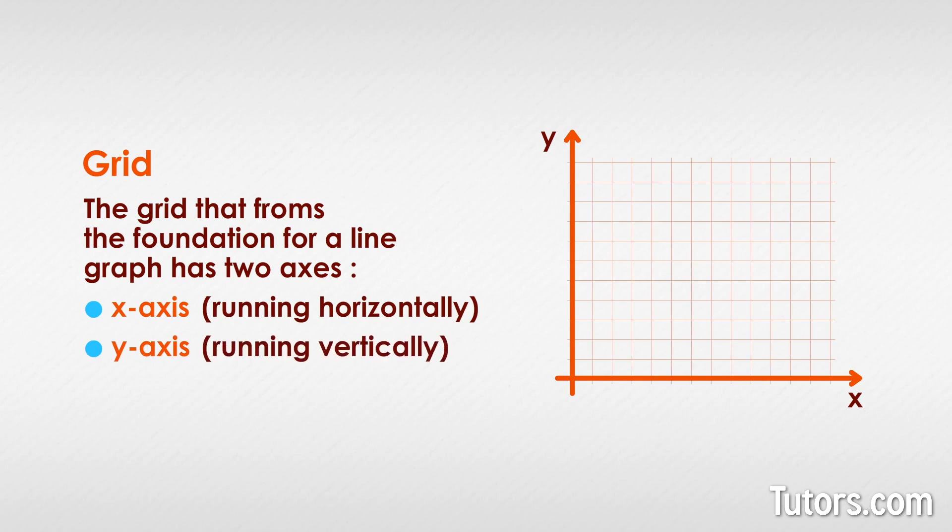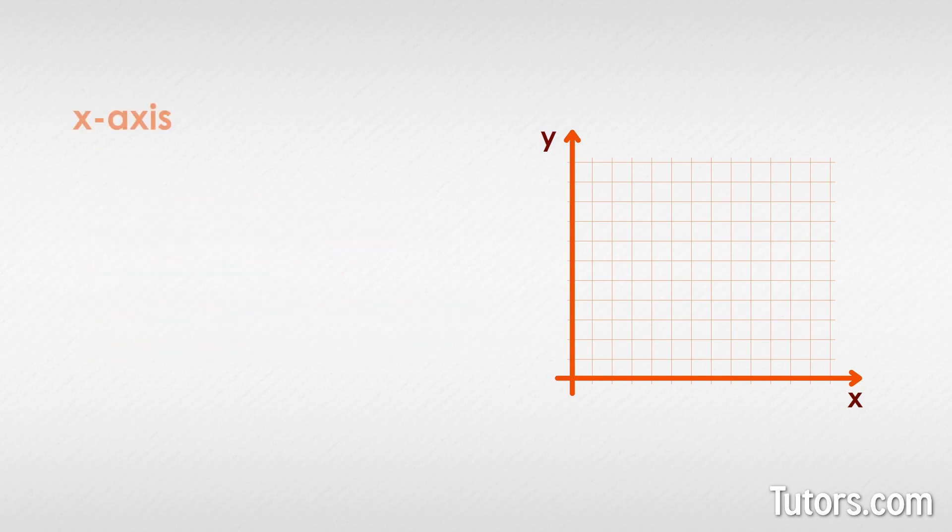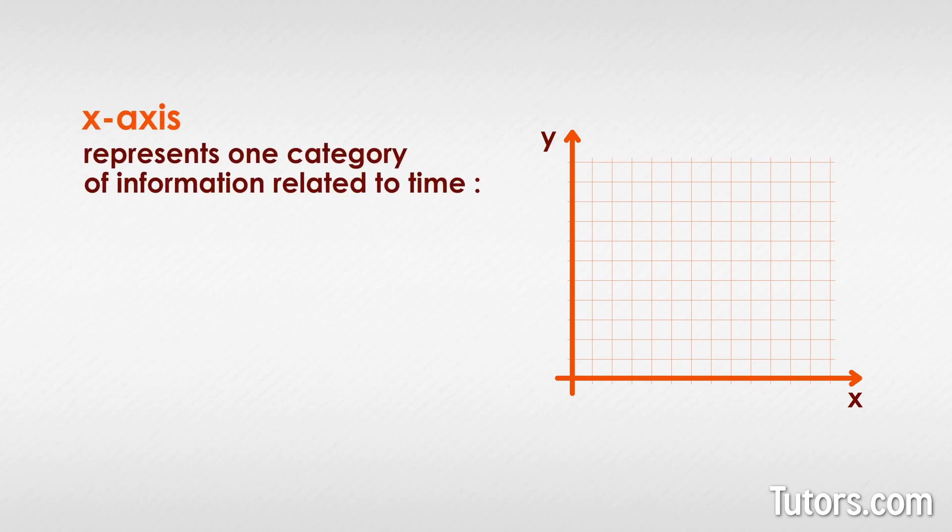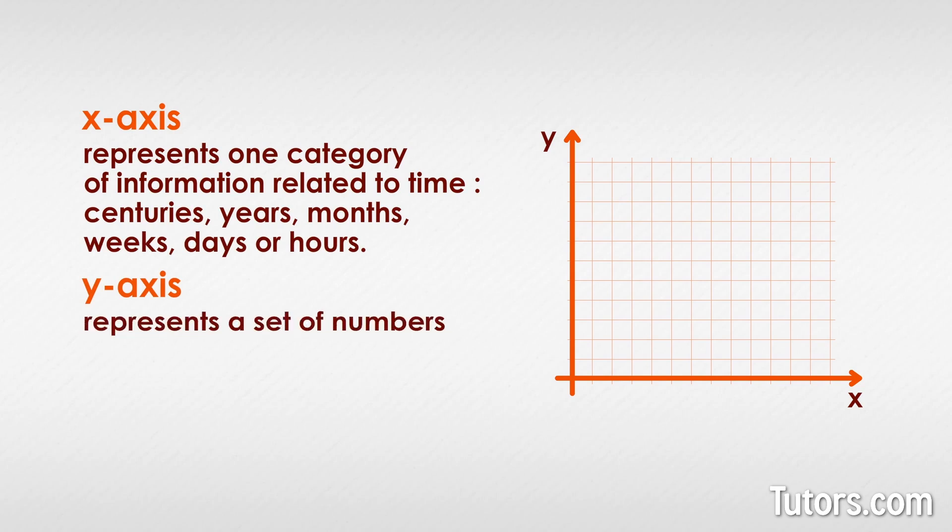These two axes need not be in the same scale, meaning their increments need not match. This is because the x-axis represents one category of information related to time, like centuries, years, months, weeks, days, or hours. The y-axis represents a set of numbers we are examining over that span of time.